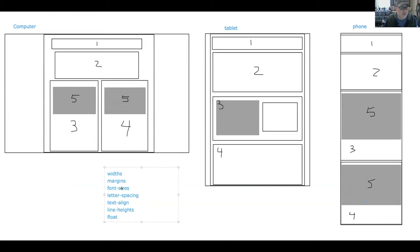You're going to be coding using the same selectors. You're not going to change them around - they're just going to have different properties. The phone will have one property, the tablet will have another, and the computer will have a different property. Basically you're using the same selectors and just giving them different characteristics.